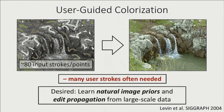We'd like to use the power of deep networks while also supporting user interaction. In the absence of user edits, we'd like to make educated guesses about color based on natural image priors. In the presence of user edits, we'd like to propagate them not only based on low-level textures, but also mid-to-high-level semantics.